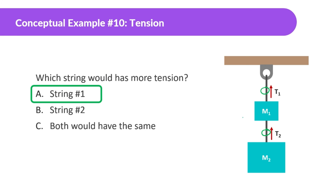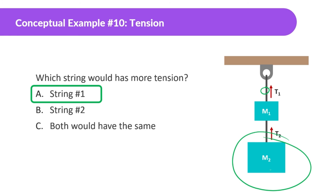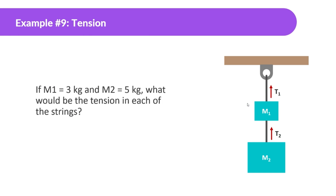Why is string 1 the answer? String 2 is only carrying one mass — if that mass wasn't there, this string would just be dangling. But string 1 is carrying both of these masses, which is why it would have more tension.